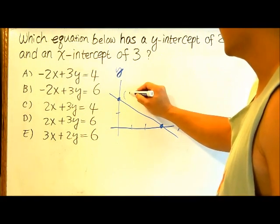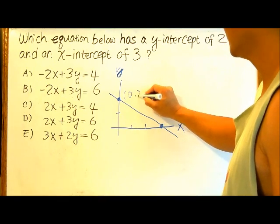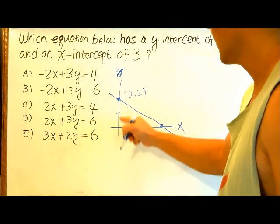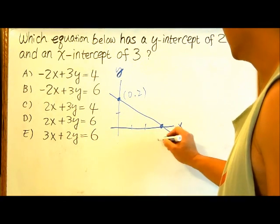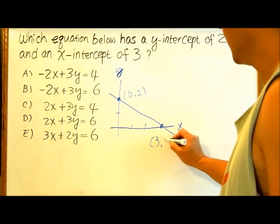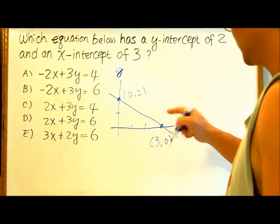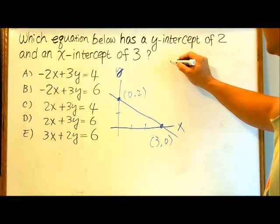This point is really (0, 2), since x is 0 right here and y is 2. This point is really (3, 0), since x equals 3 and y at this point is 0. So we need to solve this equation.